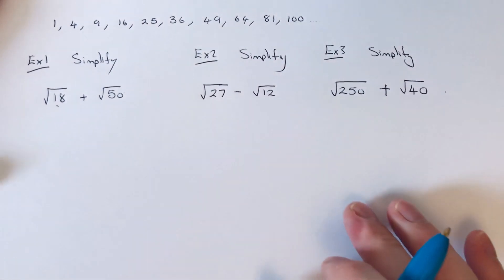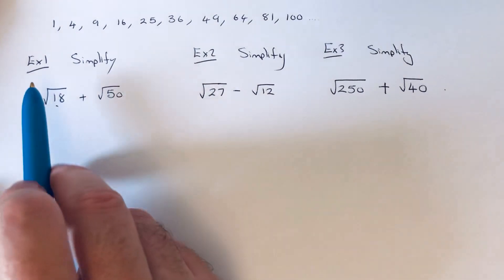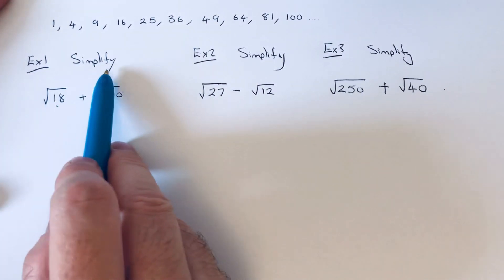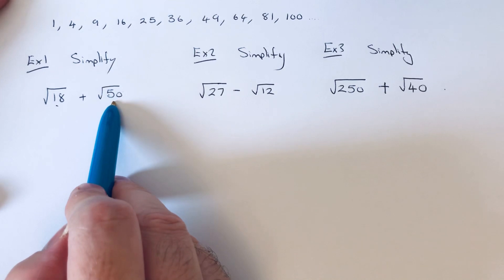I don't think we'll need any more square numbers. So let's have a look at the first example. I've got to simplify root 18 plus root 50.